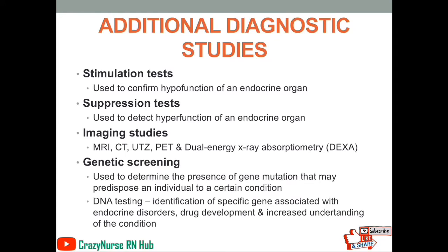We also have genetic screening, used to determine the presence of gene mutations that may predispose an individual to a certain condition. Under which we have DNA testing. The identification of specific genes associated with endocrine disorders aids in drug development and increased understanding of the condition.